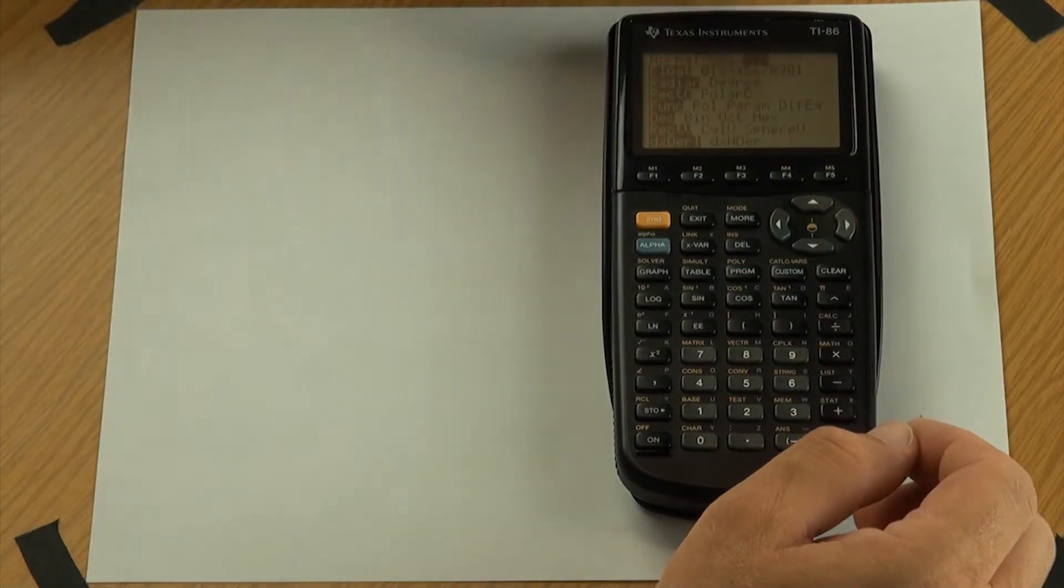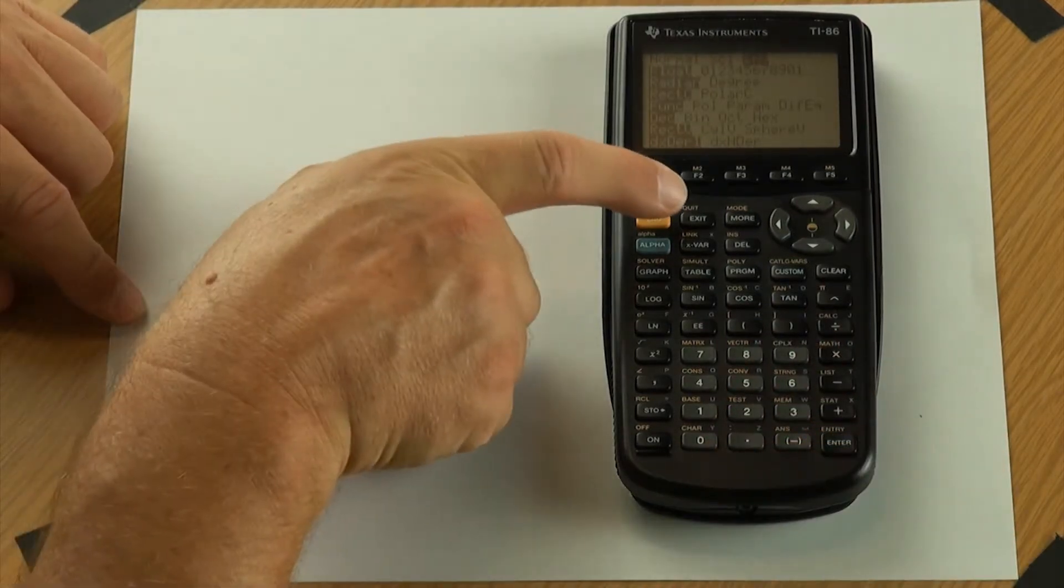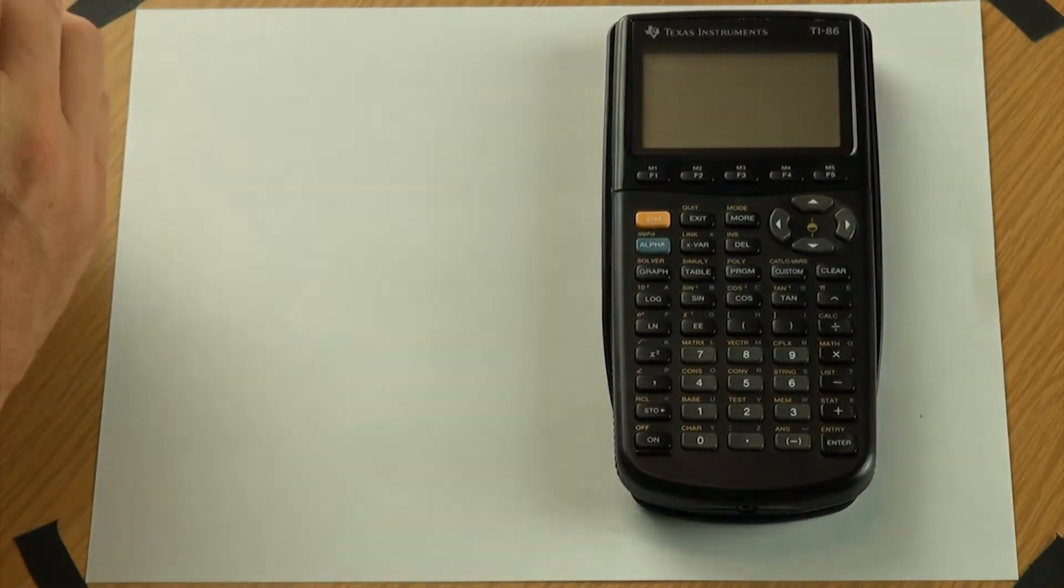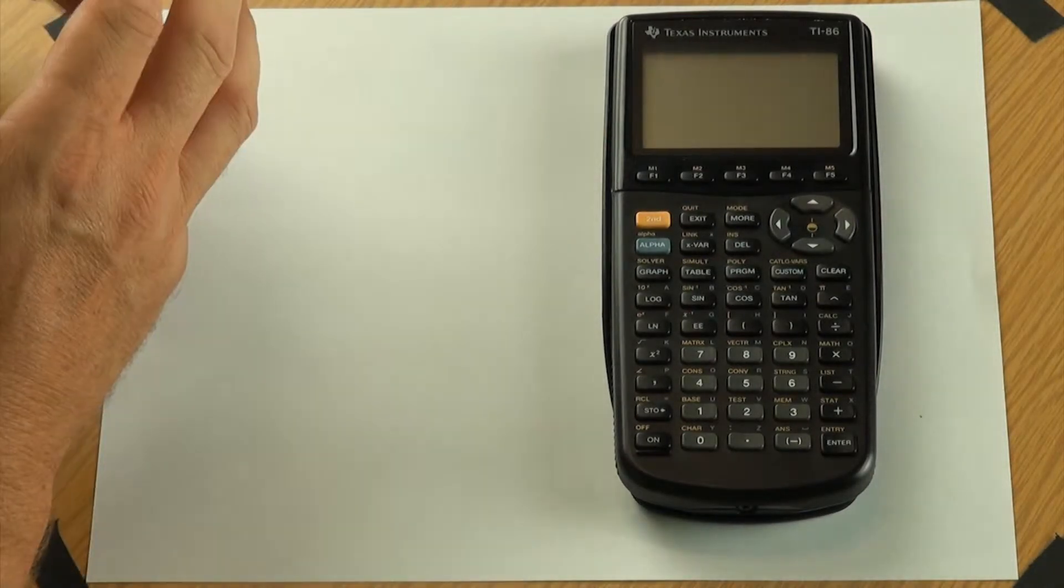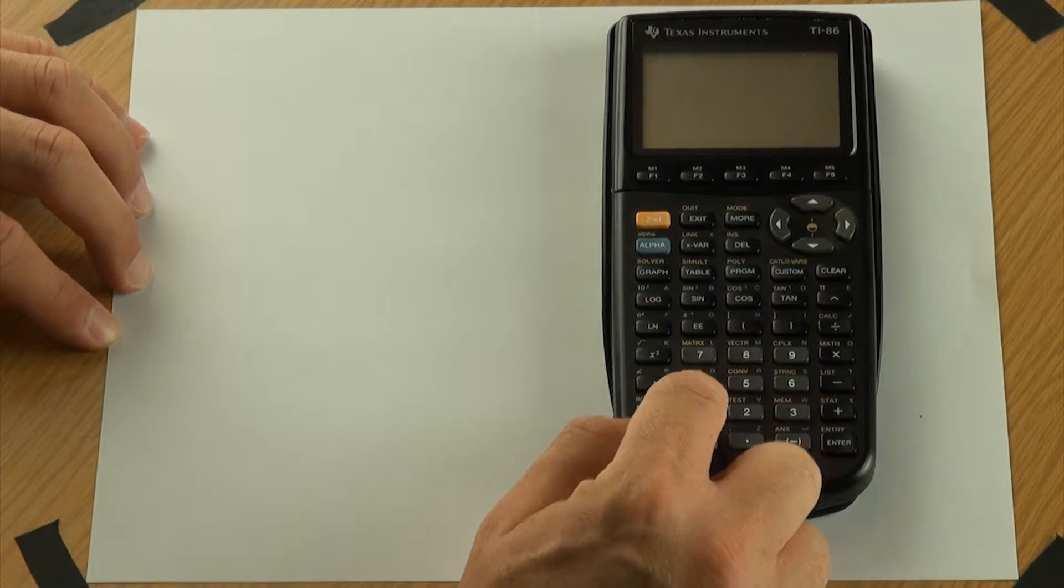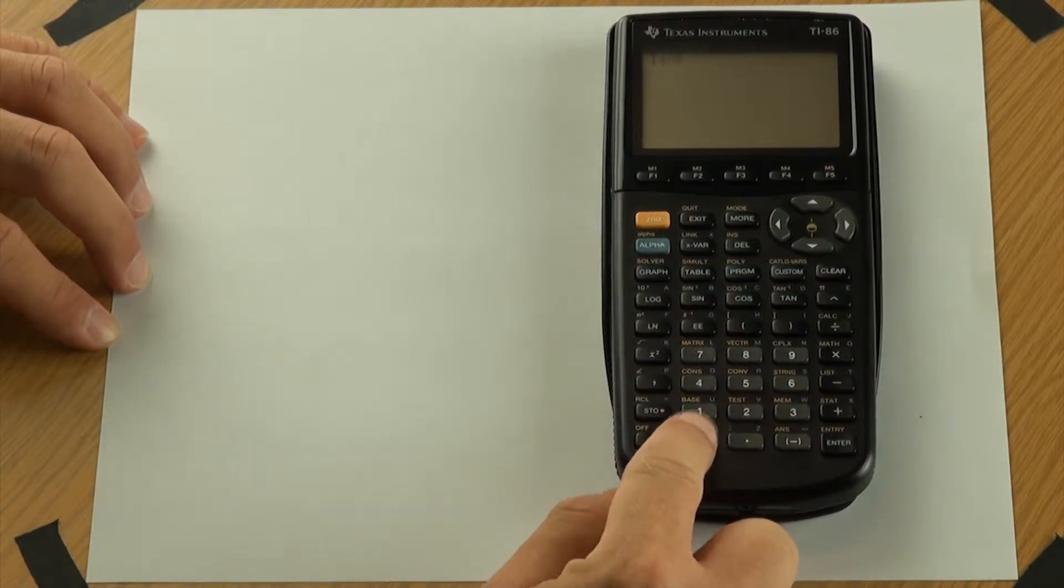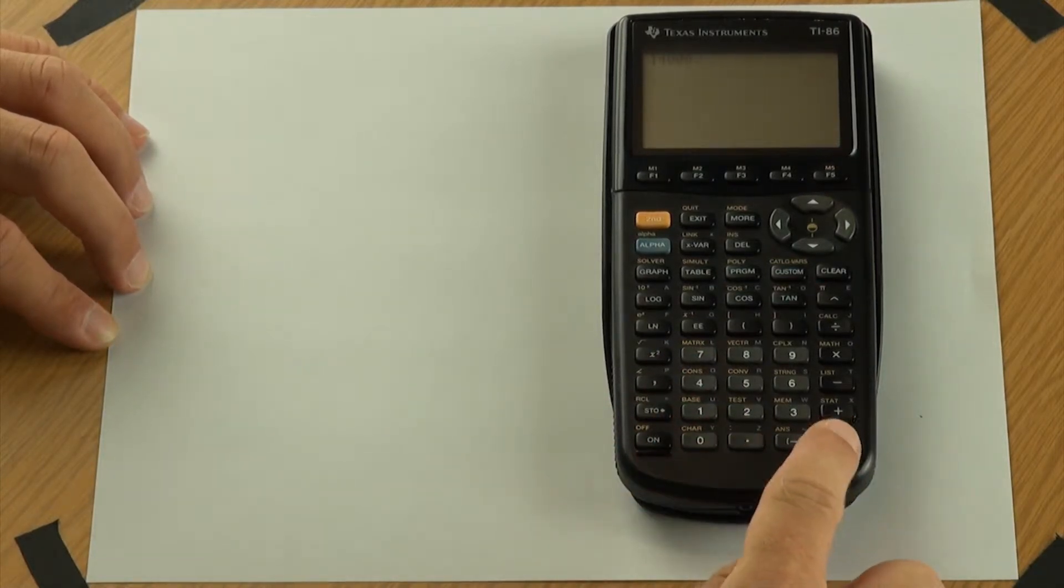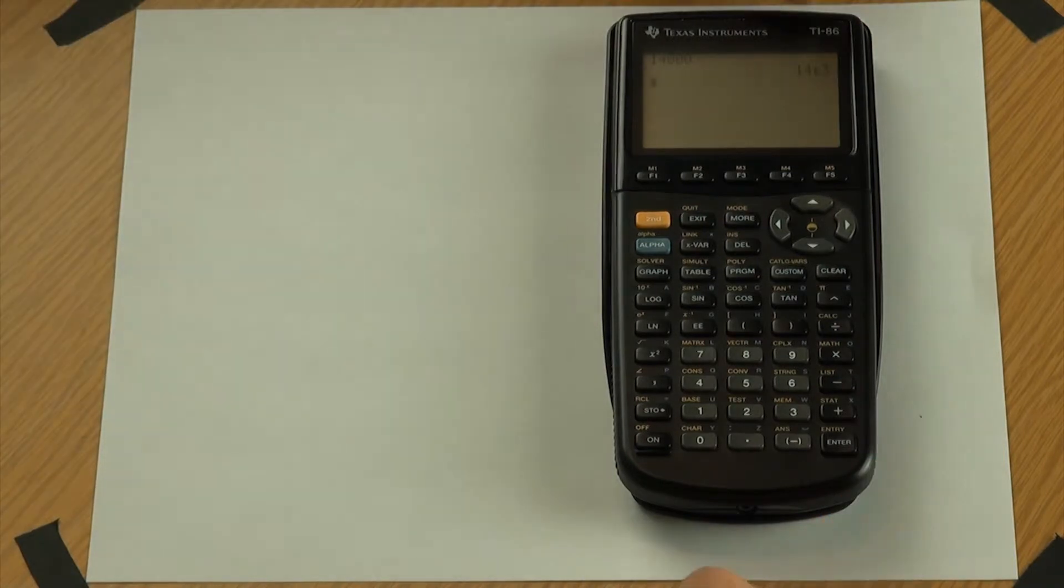Once we have engineering selected there, I can hit the exit button to get back out of the menu, and now my calculator should be in that mode. Here's a quick way to test and see whether it is. Let's take something simple like 14,000. If I just enter 14,000 and hit the enter button,